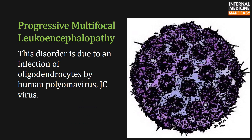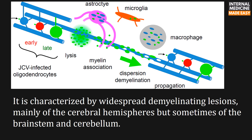Progressive multifocal leukoencephalopathy is due to an infection of oligodendrocytes by human polyomavirus JC virus. It is characterized by widespread demyelinating lesions mainly of the cerebral hemispheres, but sometimes of the brainstem and cerebellum.